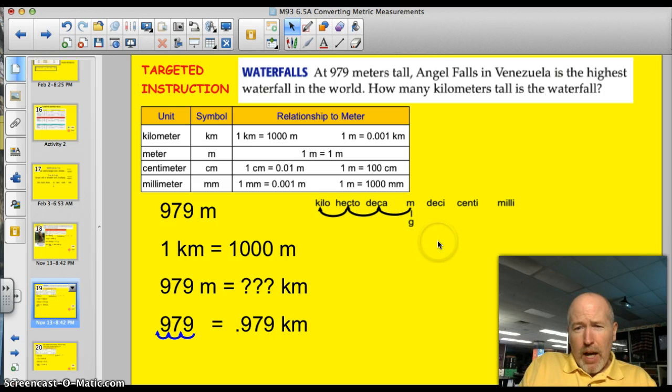You with me? I moved it three spaces. I moved it three spaces. I was going from meters to kilometers. 1, 2, 3. I take a look at my number. 979. This is where the decimal would be. I have to move it three spots to the left, because that's what I did in my chart over here. I'm dividing by 1,000. I'm getting a smaller number.